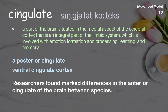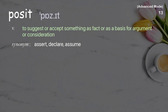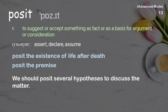Cingulate cortex. Examples: A posterior cingulate. Ventral cingulate cortex. Researchers found marked differences in the anterior cingulate of the brain between species. Posit. To suggest or accept something as fact or as a basis for argument or consideration. Examples: Posit the existence of life after death. Posit the premise. We should posit several hypotheses to discuss the matter.